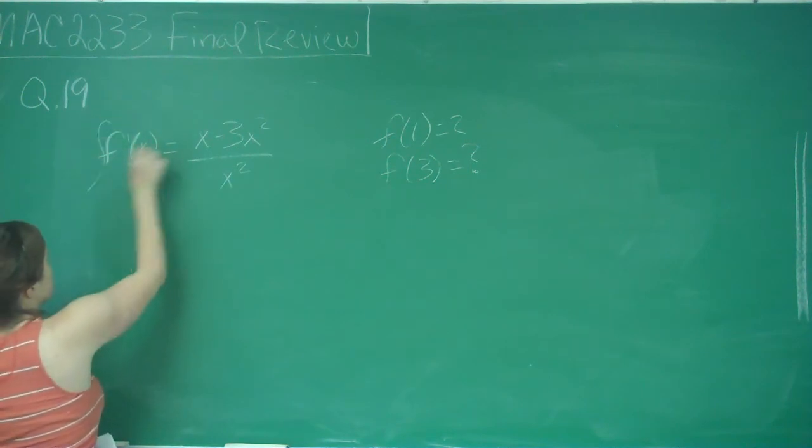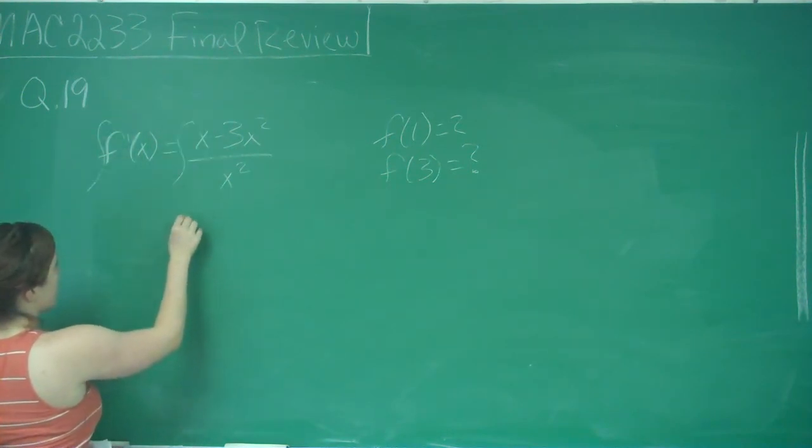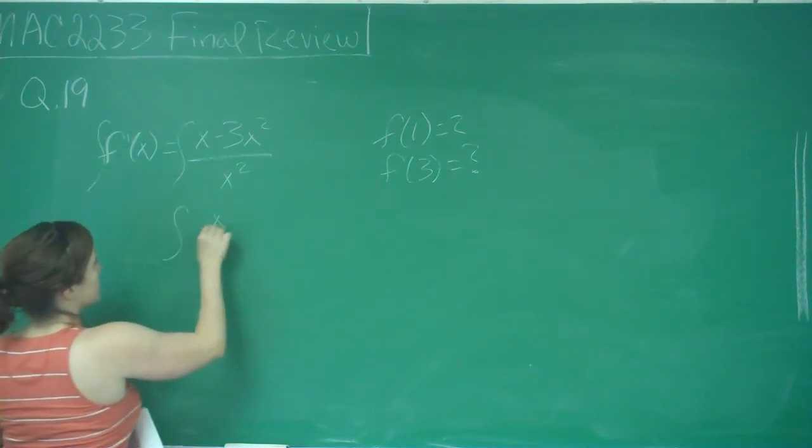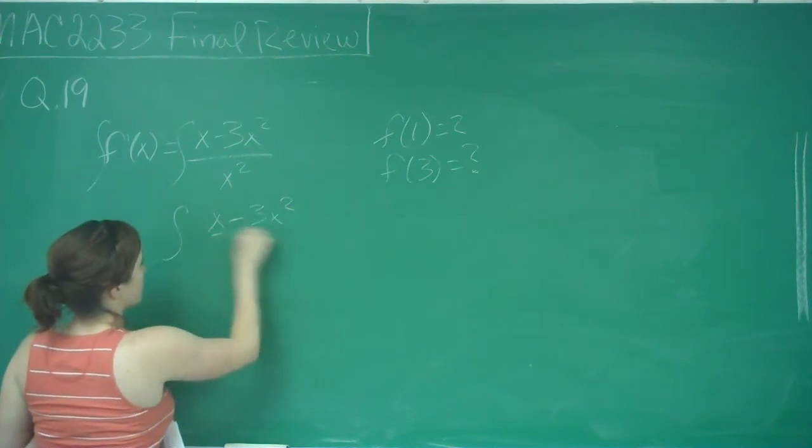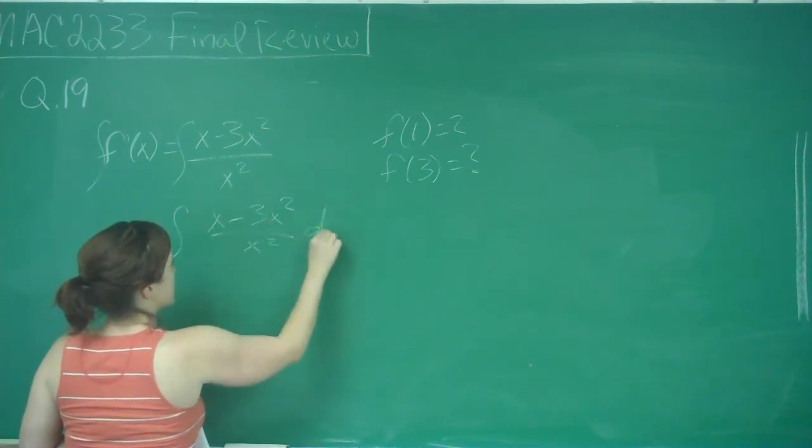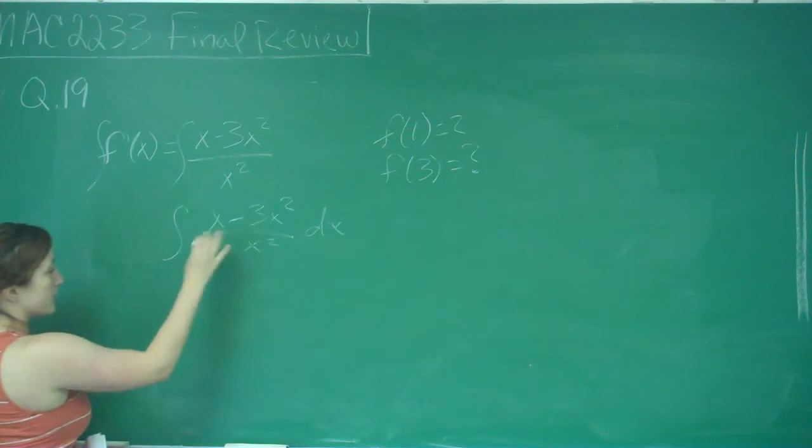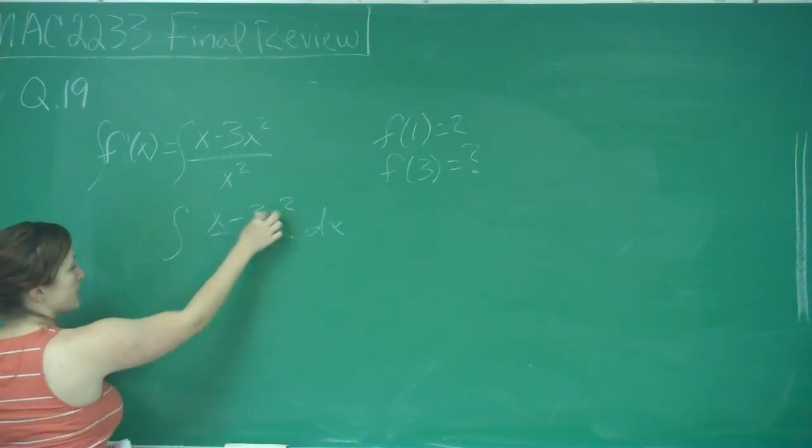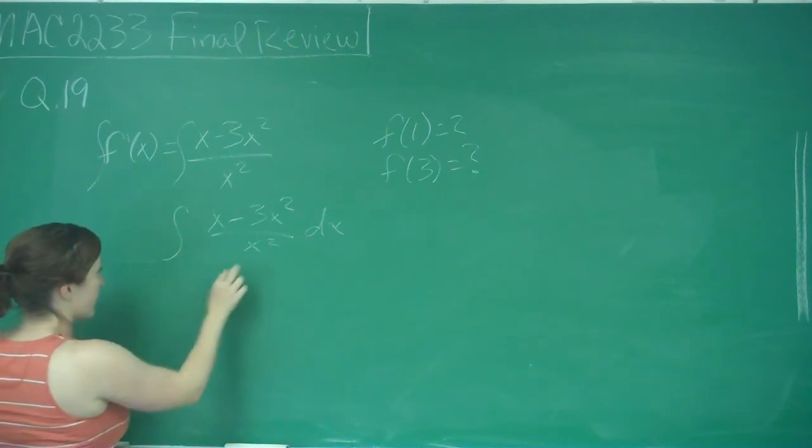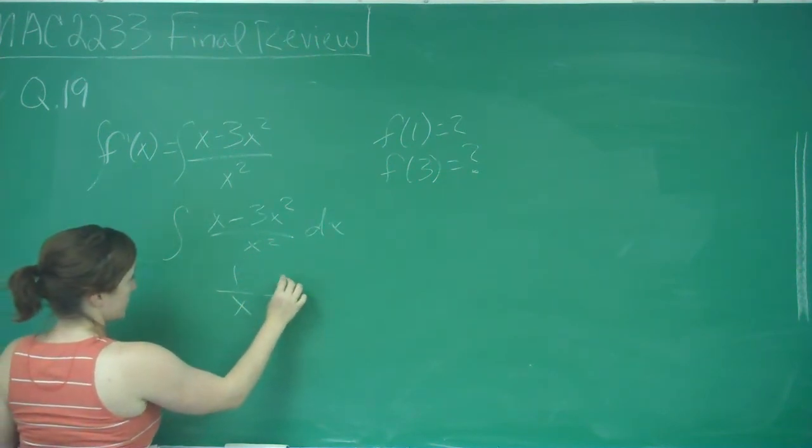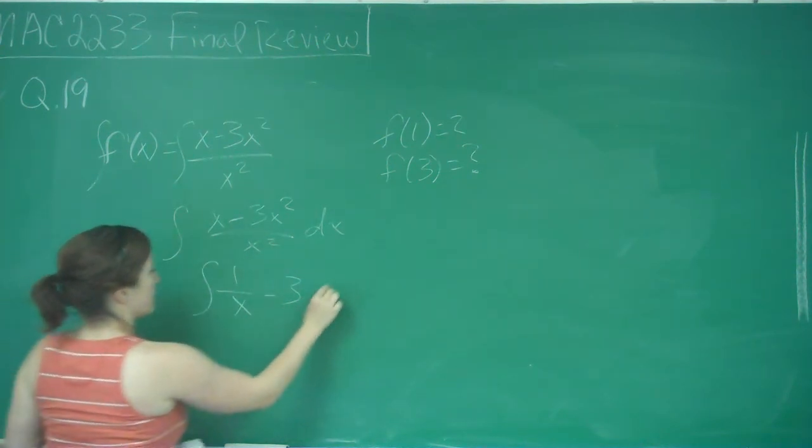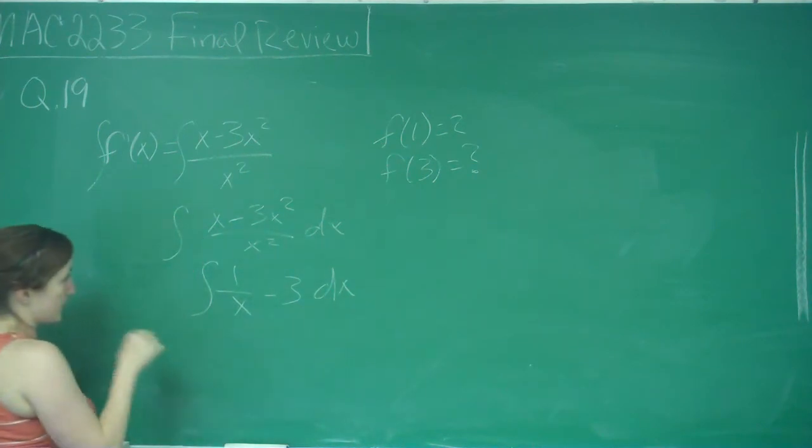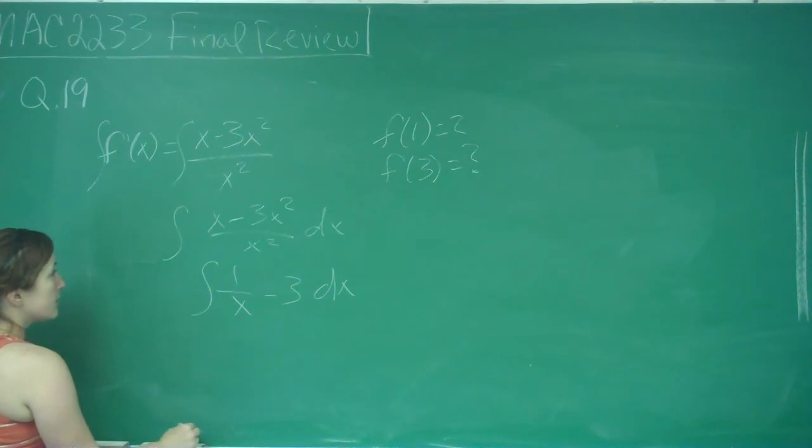So I'm going to take the integral of both sides: the integral of (x - 3x²)/x² dx. What I'm going to do first is simplify this by dividing each of my top terms by x², so I get 1/x - 3, because the integral of that is a little bit simpler.